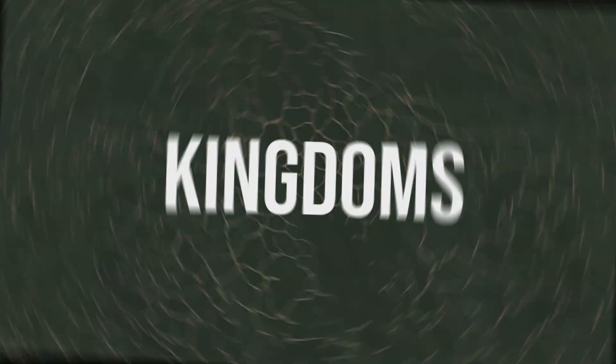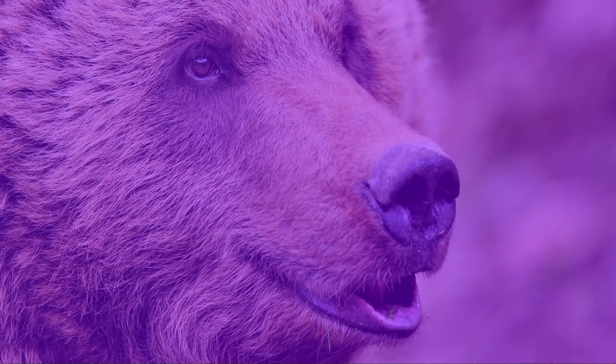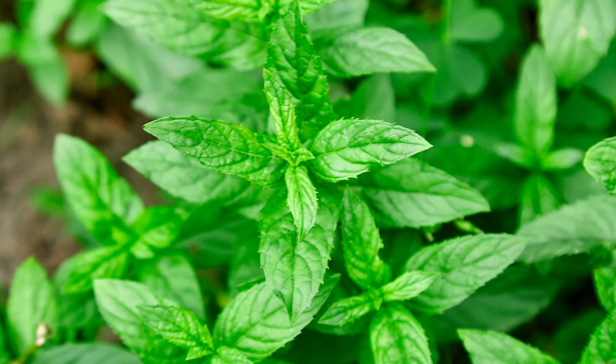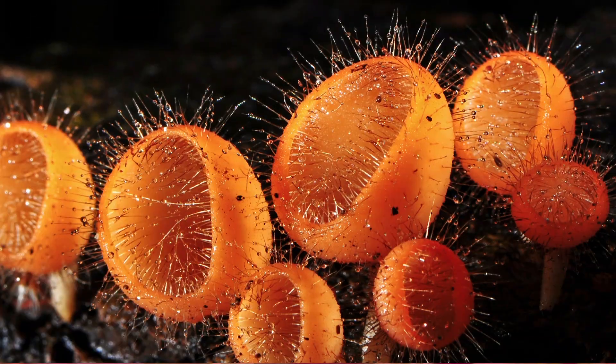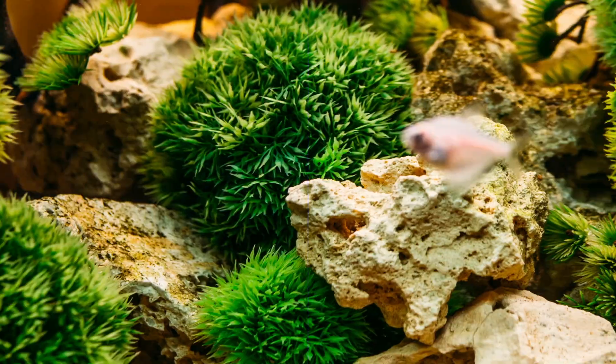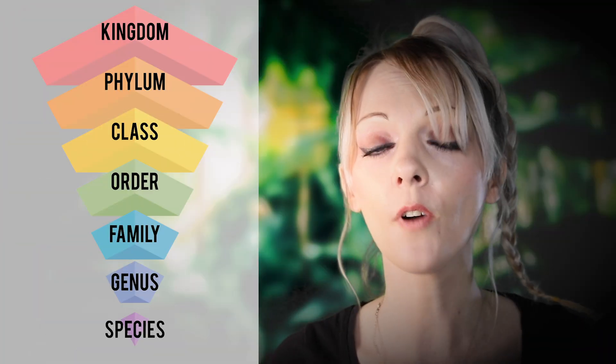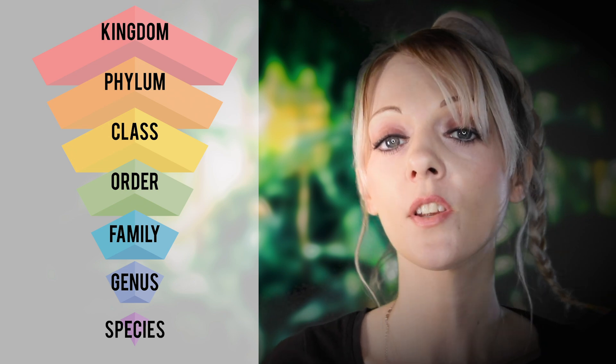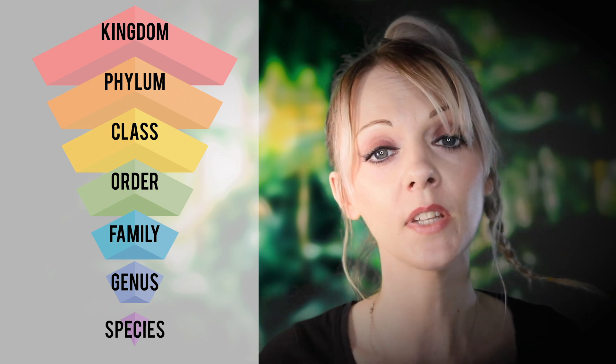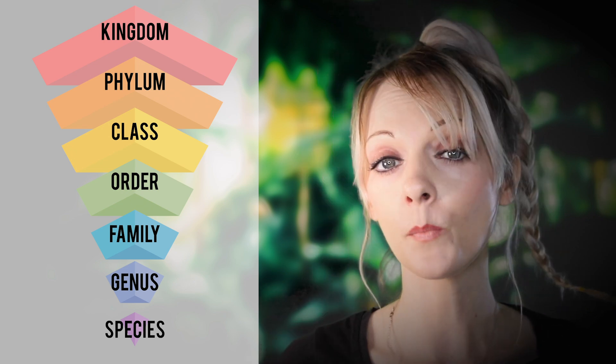There are seven major levels of classification. The first division of living things is to put them into one of five kingdoms. The five kingdoms are animals, plants, fungi, prokaryotes and protists. Living things can then be ranked according to phylum, class, order, family, genus and species.